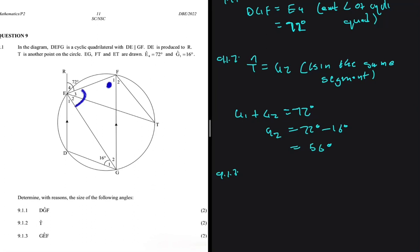Let's not forget that DE is parallel to GF, so we can say that E4 is alternating with angle F1. So we can say that F1 is equal to 72 degrees.